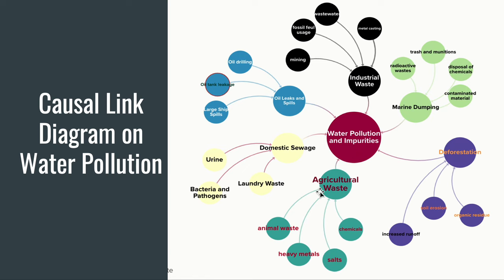Finally, we have aquaculture waste. Animal waste, heavy metals, salts, and chemicals all connect to agricultural waste, and agricultural waste, along with domestic sewage and oil leaks and spills, will contribute to water pollution impurities, which will make water bad and not good. Thank you for listening to my presentation, and I hope you have learned more about water pollution.